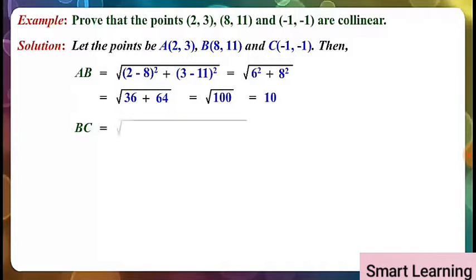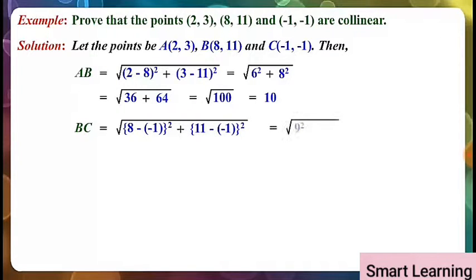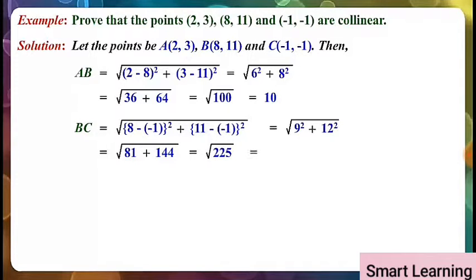BC is equal to under root of (8 minus (-1)) whole square plus (11 minus (-1)) whole square, equal to under root of 9 squared plus 12 squared, equal to under root of 81 plus 144, equal to under root 225, equal to 15.